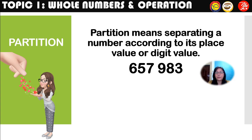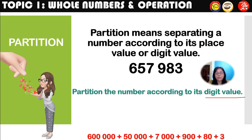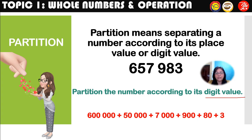Partition means separating a number according to its place value or digit value. Let's look at the number 657,983. Partition the number according to its digit value — so everything will be in digits: 600,000 + 50,000 + 7,000 + 900 + 80 + 3.